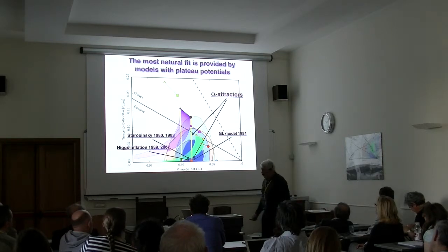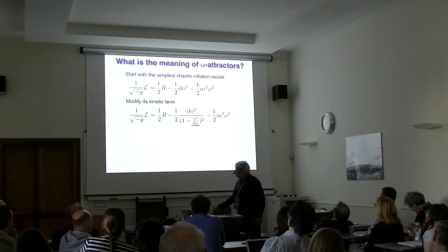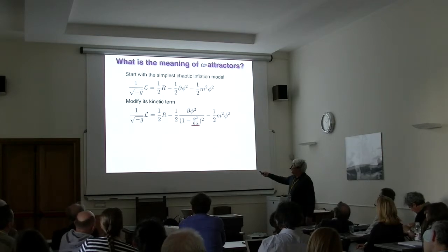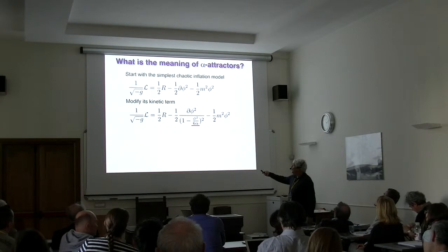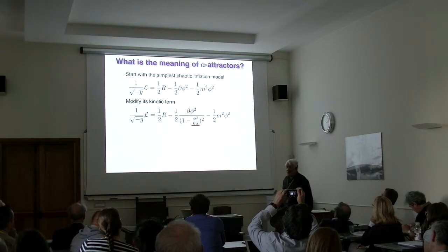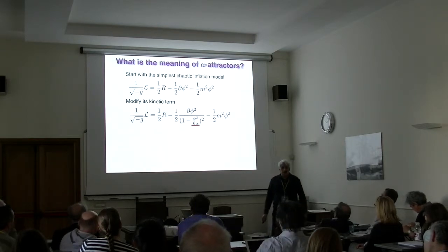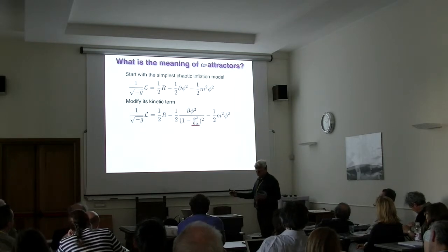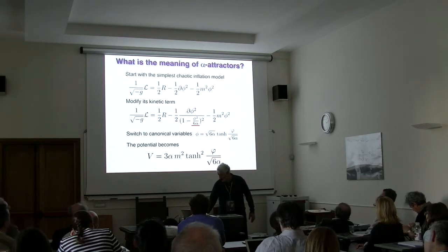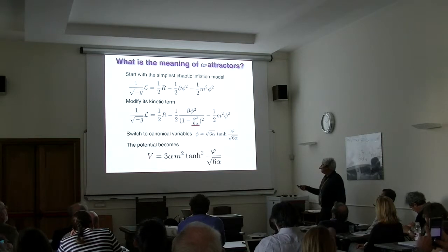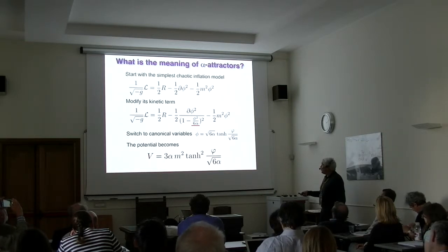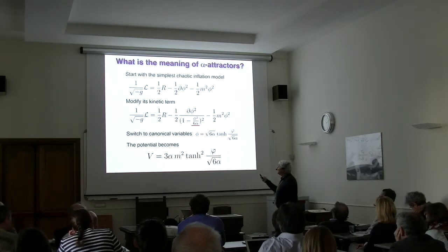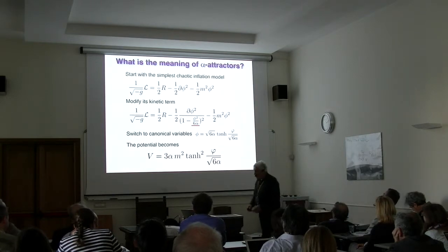Start with the simple quadratic model and make one change: introduce a singularity in the kinetic term when phi becomes sufficiently large. Then switch to a canonically normalized field, solving d-phi divided by the kinetic factor equal to the new field. The canonical variable relates to the original one, and the potential becomes a hyperbolic tangent squared. At small field values this is the same quadratic; at large values it approaches a plateau.